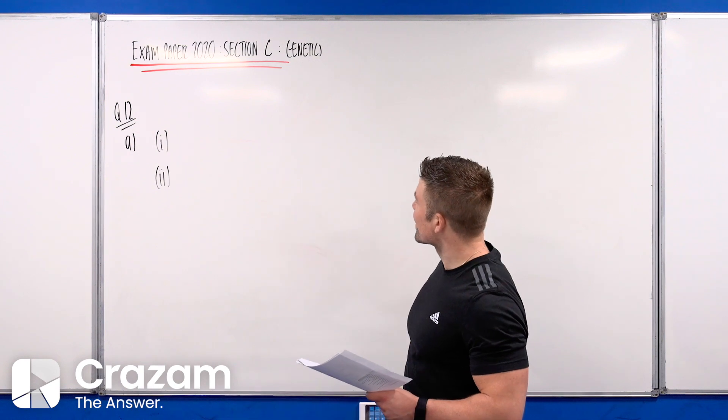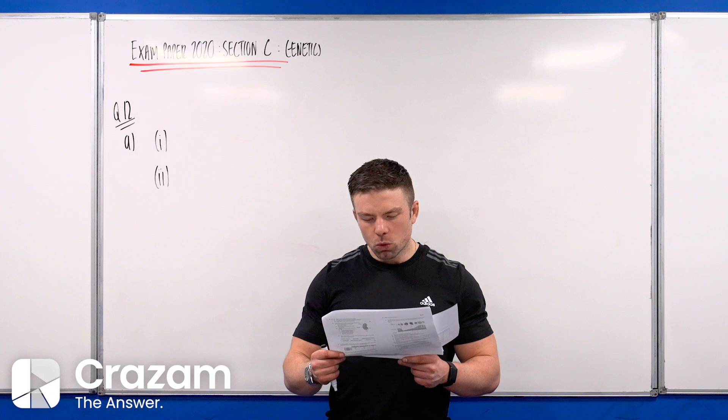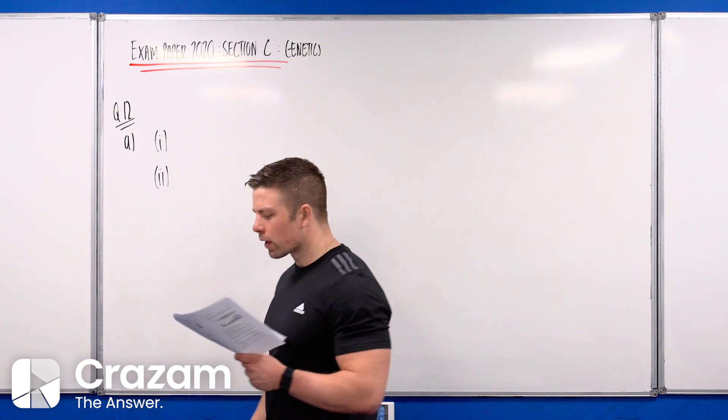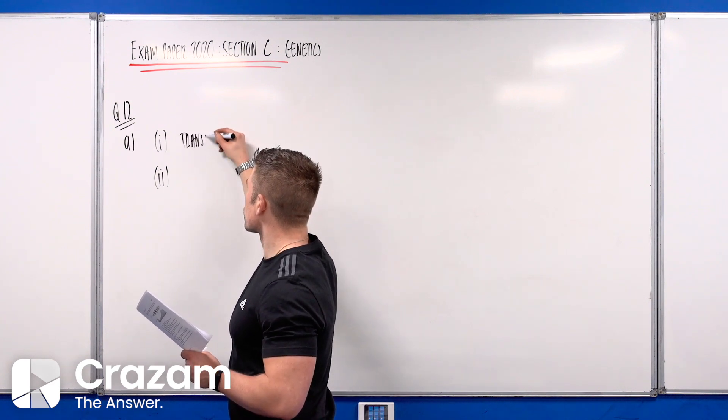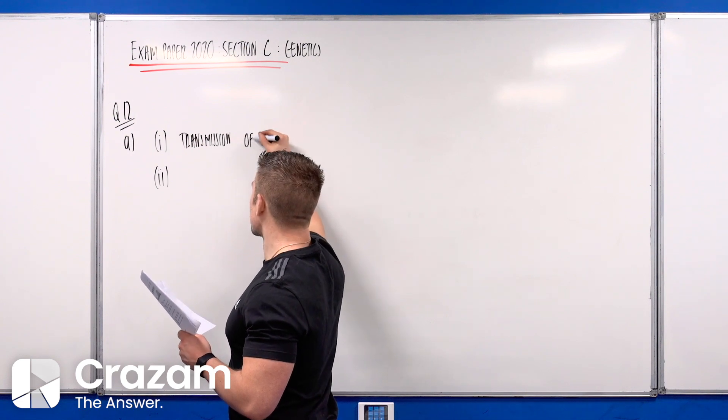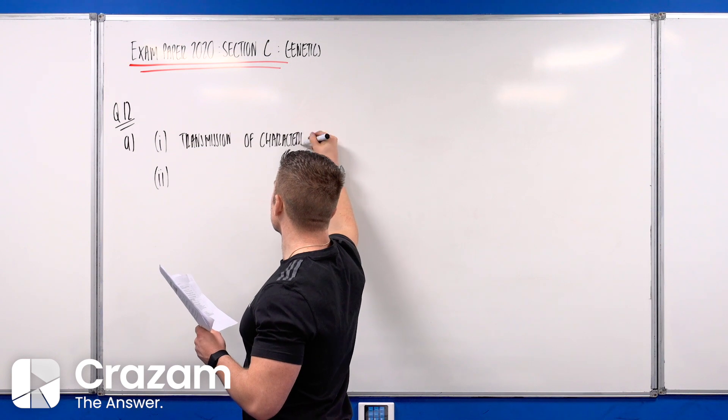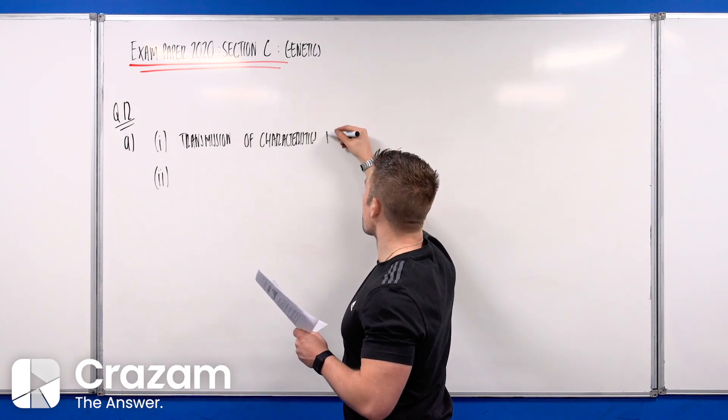This is the 2020 Section C genetics question. Question 12a, part 1, asks what is meant by the term heredity. There are different ways of describing this, but something along the lines of transmission or passing on of characteristics or genes from one generation to the next.